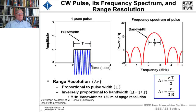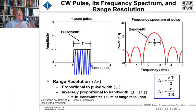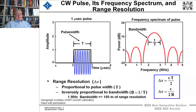From the radar equation we remember that we want as much energy on the target as possible. When we get to transmitters, you'll see that the sources which generate microwave power have limited peak powers for a given design. So to get further out in range we'd want to make the time length of the pulse longer and longer, but as we make that pulse width longer and longer our range resolution gets worse and our ability to resolve two targets is reduced.